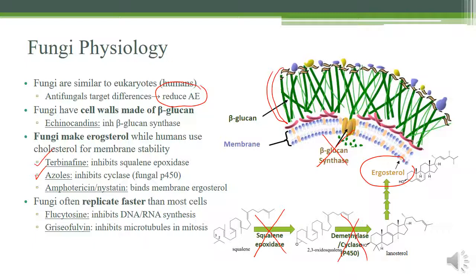We can also target the ergosterol inside the cell membrane using amphotericin, which makes pores inside their cell membrane. Another target is DNA and RNA synthesis, or replication in general. Because fungi replicate faster, this class of antifungals damages them more than us. We can inhibit their DNA and RNA synthesis and also inhibit their microtubule formation during replication.